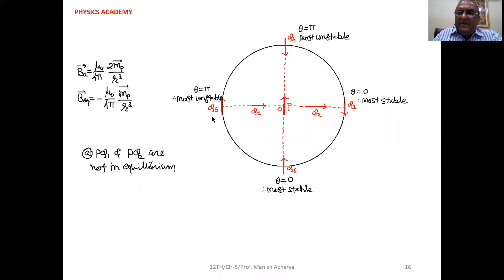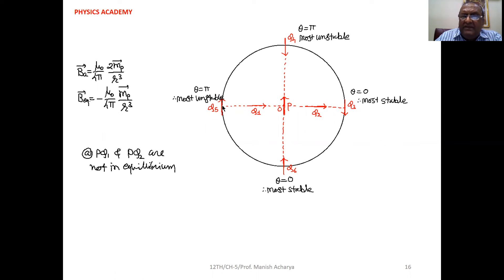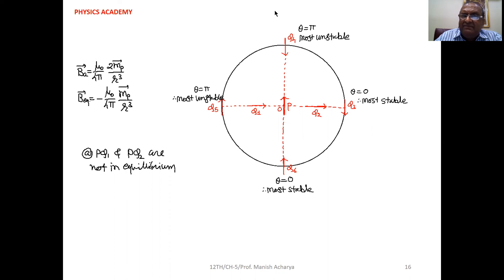Magnetic needle Q at position Q5 has its magnetic moment pointing upward, but it is on the equatorial line of P. The magnetic field of P on the equator is downward, opposite to the magnetic moment of P. So the magnetic moment of Q is upward and the magnetic field of P is downward — the angle between them is π — so Q5 is also a most unstable position.